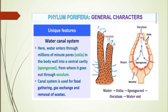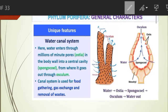Let us study some unique features of animals belonging to this phylum. Sponges have a canal system, which is one of the most important features. The canal system is a network of channels that connect the spongocoel to the outside through ostia. The canals are lined by choanocytes, which maintain a constant flow of water from ostia to osculum through the spongocoel. This helps in nutrition, respiration, reproduction, and excretion.